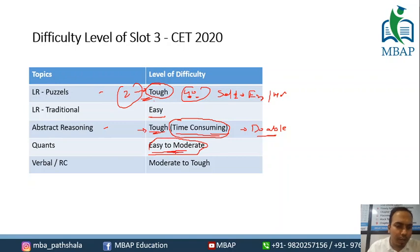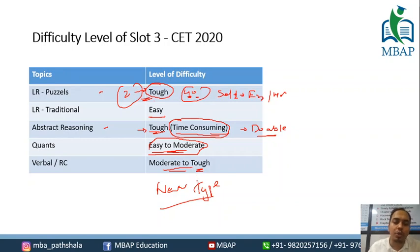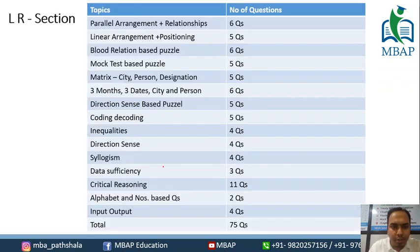Just like any other slot, CONS was easy — easy to moderate level. Verbal we would call moderate to tough because this time they are giving new types of questions. Students are not very familiar with these new types, so it can lean towards tough for them. But someone who is good with reading skills and English usage will find it easy to moderate only.